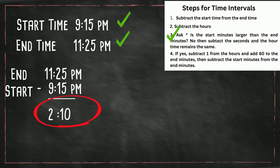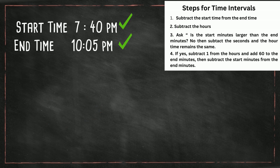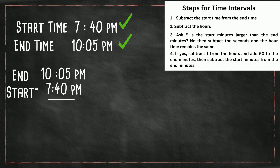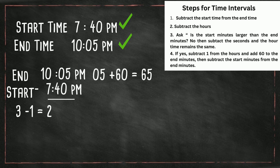Now let's move on to one where the start minutes is larger than the end minutes. What's the time interval between 7:40 and 10:05 p.m.? First, subtract start from end. Now subtract the hours — 10 minus 7 is 3. We then ask ourselves: is the start minutes larger than the end minutes? In this case, yes. So we subtract 1 from the hours — 3 minus 1 is 2. Now we add 60 minutes to our end minutes — 60 plus 5 is 65 minutes. Then subtract the start minutes: 65 minus 40 is 25. So the interval between 7:40 p.m. and 10:05 p.m. is 2 hours and 25 minutes.